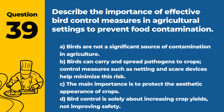Question 39. Describe the importance of effective bird control measures in agricultural settings to prevent food contamination. a. Birds are not a significant source of contamination in agriculture. b. Birds can carry and spread pathogens to crops. Control measures, such as netting and scare devices, help minimize this risk. c. The main importance is to protect the aesthetic appearance of crops. d. Bird control is solely about increasing crop yields, not improving safety. Answer: b. Birds can carry and spread pathogens to crops. Control measures, such as netting and scare devices, help minimize this risk. Preventing bird-related contamination is important for food safety.